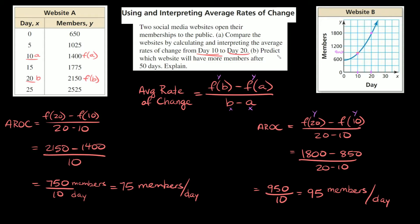Now what does part B say? It says predict which website will have more members after 50 days — explain. So let's start with website A. It doesn't go all the way to day 50, it only goes to day 25. But something you might notice with the members is that the increase is constant. To get from 650 to 1025, you add 375. To get from 1025 to 1400, you add 375. To get from 1400 to 1775, you add 375 — and it just keeps going. So website A is growing at a constant rate; every five days it's growing by exactly 375 members.